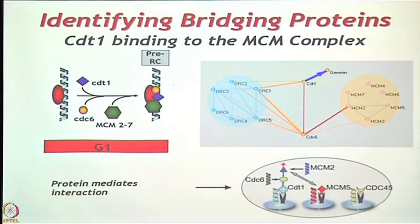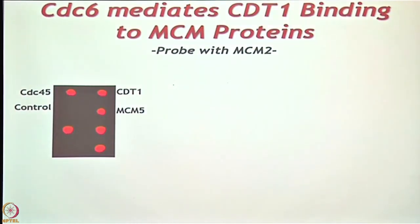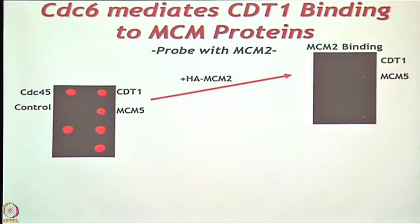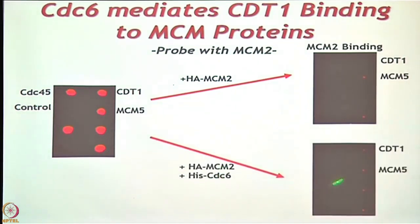As a control we had MCM5 and a negative control CDC45. This shows that all the proteins were made on the array. If we add MCM2 without CDC6, you don't see any binding at CDT1, but you do see the positive control MCM5 indicated. If you add MCM2 plus CDC6, now you can see CDT1 binding — pretty faint, but we definitely observed it.